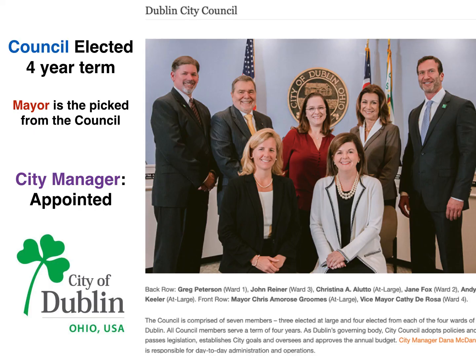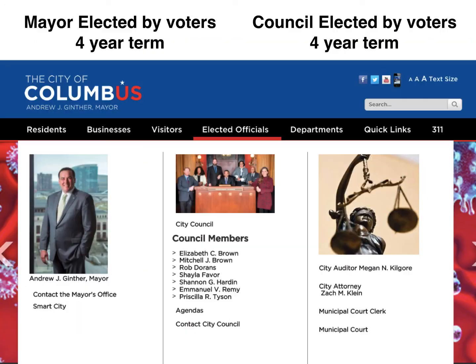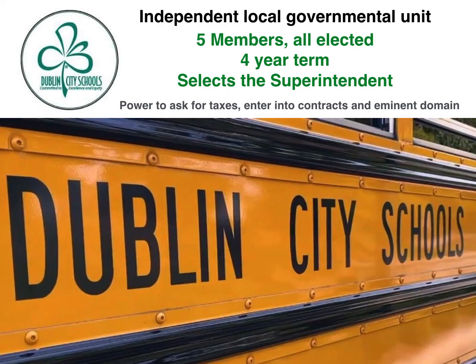So there are basically two types of city government: weak mayor city council and strong mayor city council. And then you also have local school boards as well.